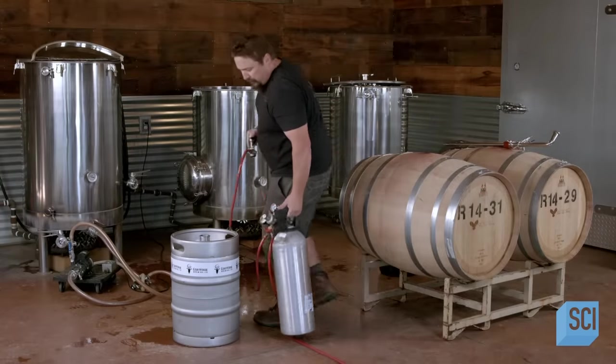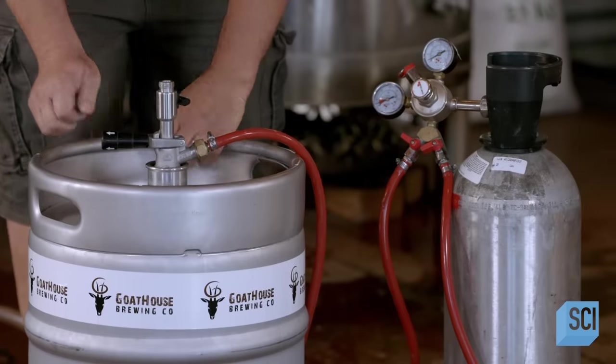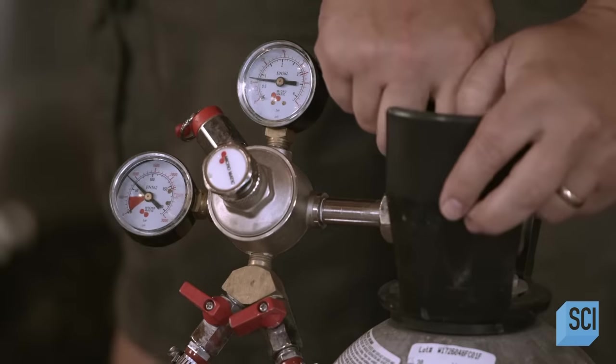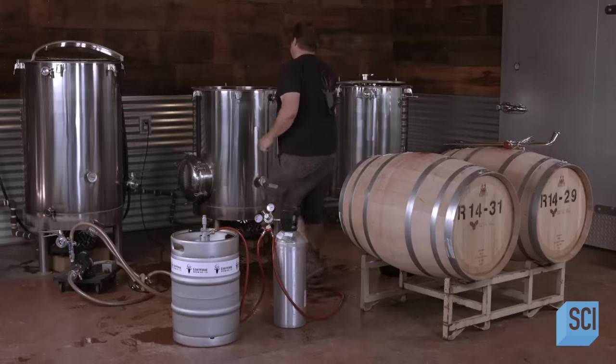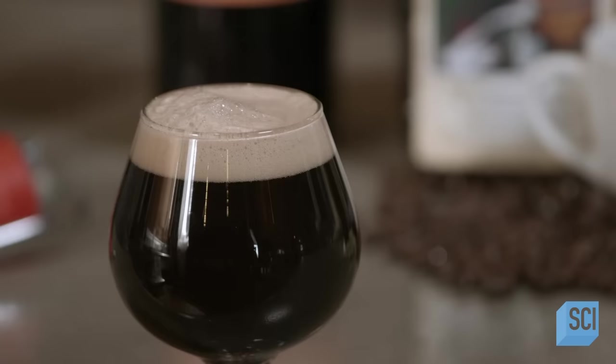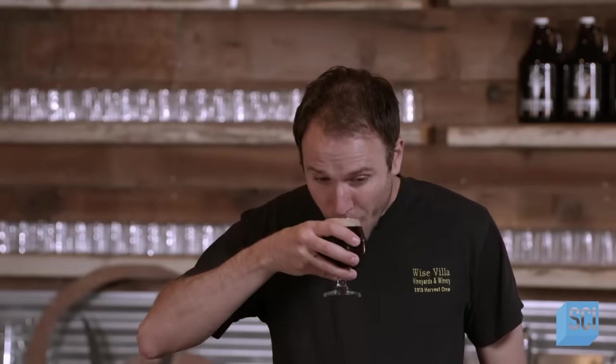After blending the ingredients in the tank, the brewmaster pumps the vino brew into a beer keg. Then he injects carbon dioxide gas to add more carbonation. When you pour a glass of vino brew, the bubbles rise to the top, producing foam known as beer head. But while this might look and feel like regular beer, one sip tells you that vino brew is uniquely different.